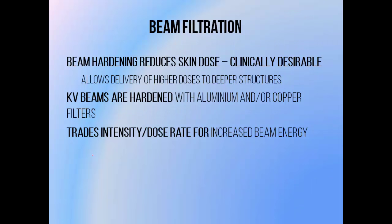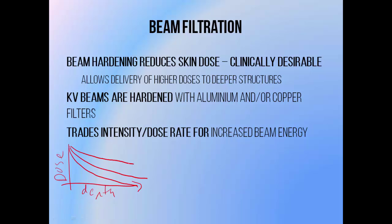Beam hardening is often desirable in radiotherapy, since a higher beam energy means dose can be deposited deeper inside the patient. In kilovoltage radiotherapy, the maximum dose is always delivered to the skin, but as beam energy increases, the ratio of dose at depth to dose at the skin surface increases. This allows a higher dose to be given to something underneath the skin while reducing the skin dose. Kilovoltage beams are still used today to treat superficial tumours like skin cancers, and are hardened using aluminium and/or copper filters.